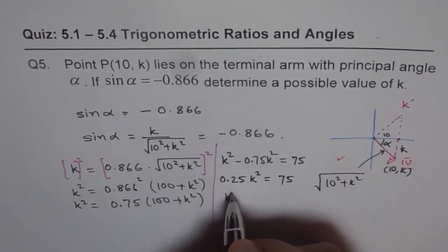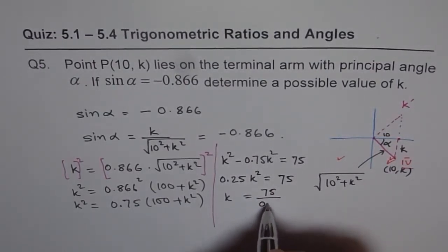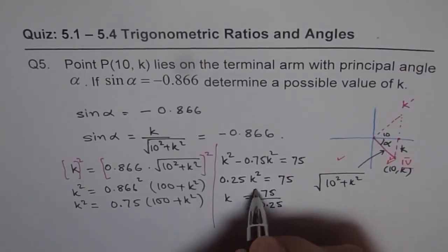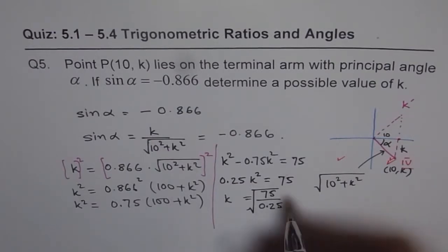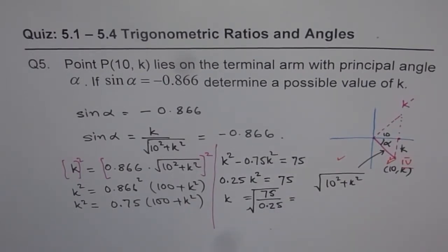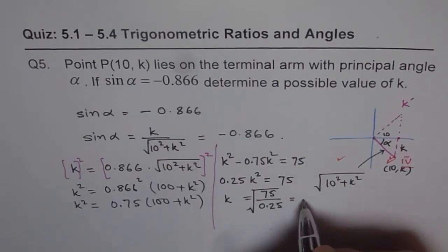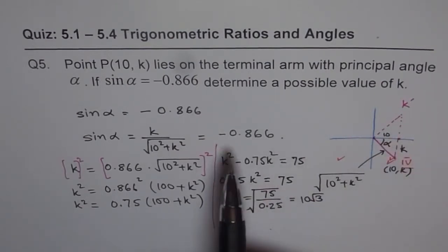So k should equal the square root of 75 divided by 0.25. Using a calculator: 75 divided by 0.25 gives us 300. So the square root of 300 is the answer — that is 10 square root of 3. That becomes the value of k when we are considering it to be positive.